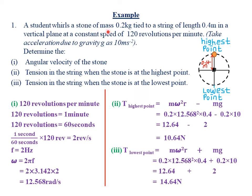So let's look at examples of application of the formulas that we have derived from our previous class. Our first example reads that a student has a stone of mass 0.2 kg tied to a string of length 0.4 meters in a vertical plane at a constant speed of 120 revolutions per minute. We are told to take acceleration due to gravity as 10 meters per second squared. Part A, Roman numeral 1: determine the angular velocity of the stone.